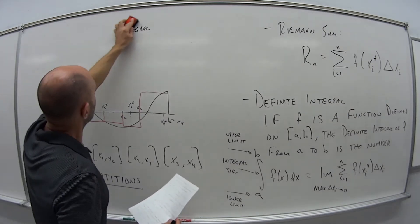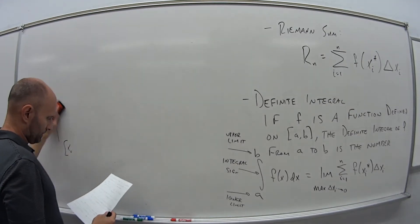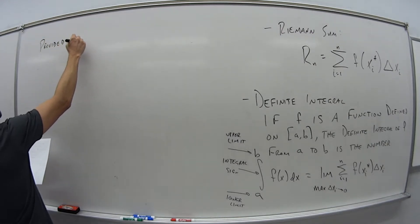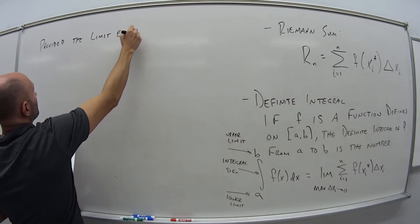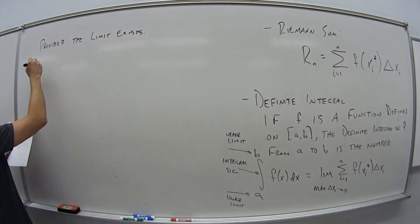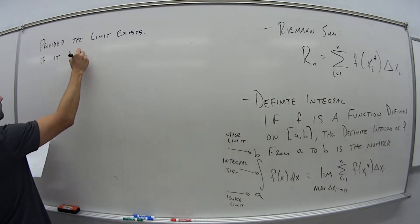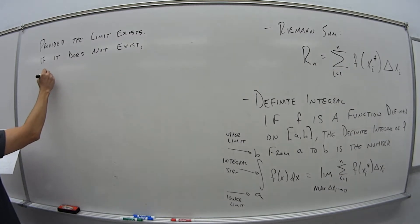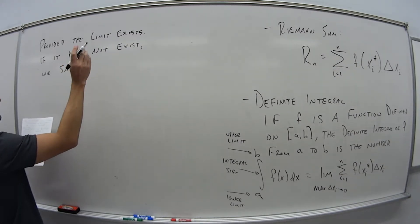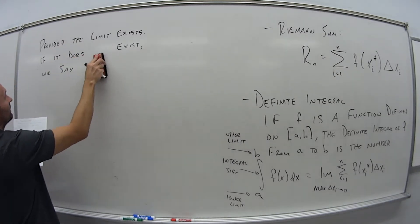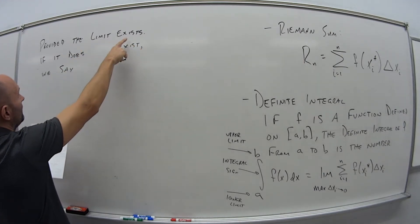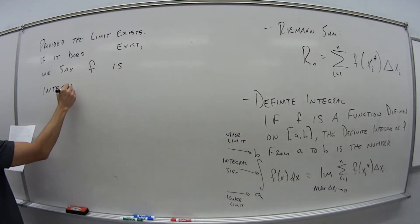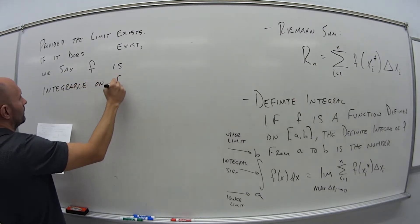So it's that value provided the limit exists. And if the limit does exist, we say F is integrable on the closed interval AB.